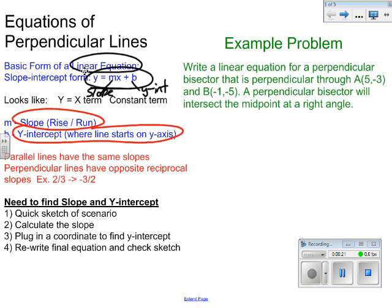So you should always remember that parallel lines have the same slope, which means they never intersect, while perpendicular lines have a negative reciprocal slope, or opposite reciprocal.